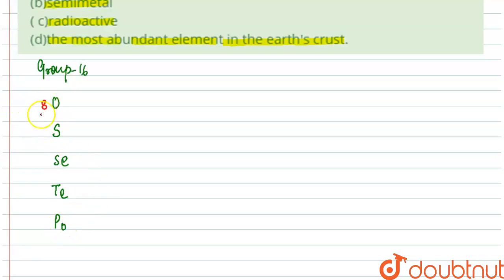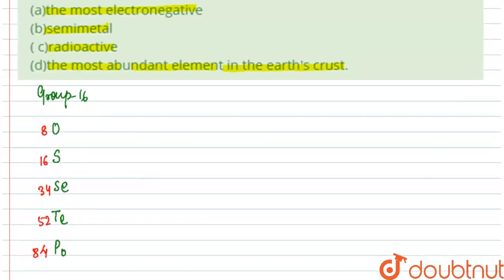Oxygen has the atomic number of 8, sulfur at 16, selenium at 34, tellurium at 52, and polonium is at 84. Now let us try and solve this question.